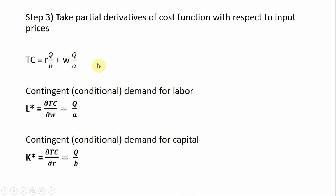we will get our conditional demand for labor and conditional demand for capital. So taking the partial derivative of total cost with respect to the wage, we're going to get just Q divided by A.